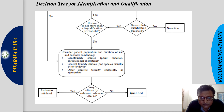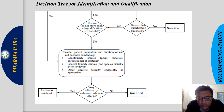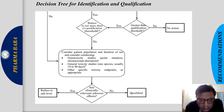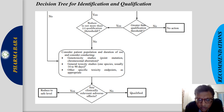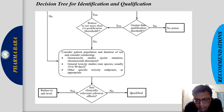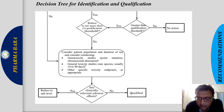If the impurity exceeds the qualification threshold, either reduce it below the qualification threshold, or if not possible, qualify it by carrying out toxicological studies. Consider patient population, duration of studies, and genotoxic studies — which evaluate point mutations and chromosomal aberrations. General toxicological studies, both animal and human, for 14 to 90 days with specific toxic endpoints are performed. If no clinical adverse effect is observed, the amount at which the impurity is found safe becomes the qualification limit.